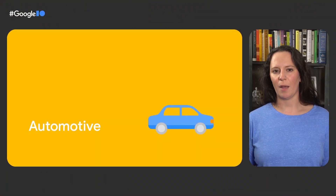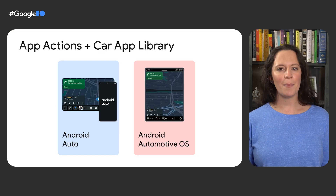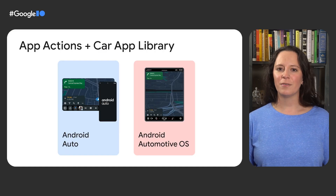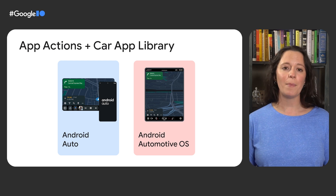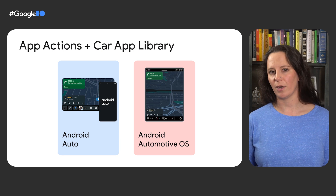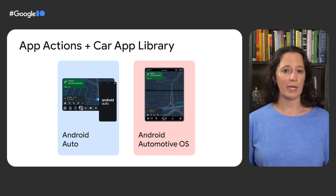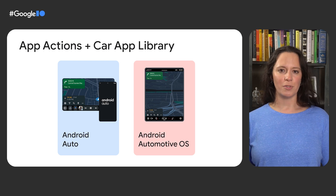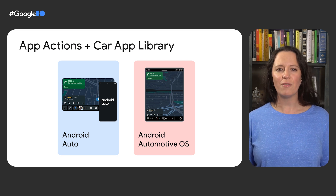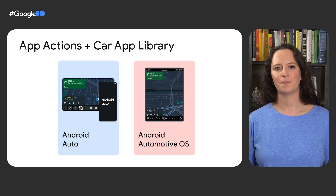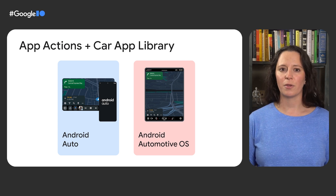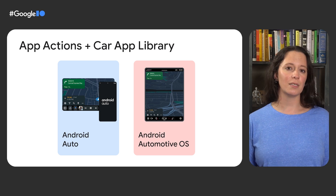Wearables aren't the only type of device where users may want a voice-first experience. Let's take a look at automotive applications. If you have a use case for your app that's appropriate for use in cars, App Actions works there as well. Developers can add voice functionality to car apps by expanding their mobile App Actions implementation with the car app library. These apps can then be used on either Android Auto or Android Automotive OS. Android Auto enables users to connect their Android phones to compatible vehicles and use their favorite apps on the car's display. Android Automotive OS with Google built-in allows users to access Google Assistant, Google Maps, and apps from Google Play directly from the car display without the need for a phone.